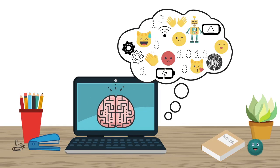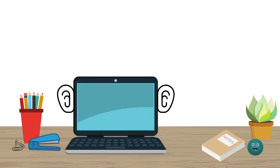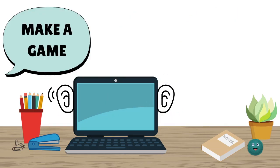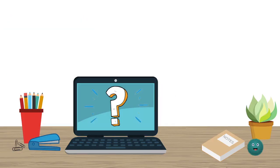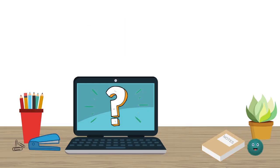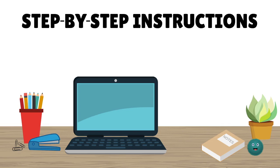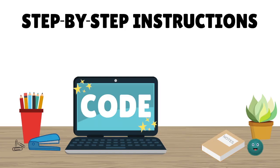A computer can't think for itself, and you can't talk to it like a person. This is because computers don't understand the same language that you speak. Computers only understand code. If we want a computer to do something, like make a game, you can't just tell it to. You need to give the computer step-by-step instructions for how to make the game in a language it understands — code. Computers need code to do pretty much anything.